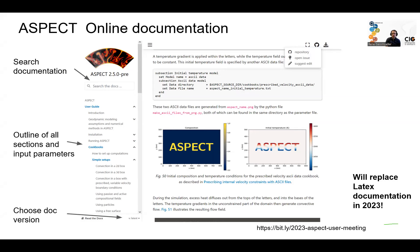It will be possible to choose the version of the documentation in the future — you can choose whether you want to see the latest development version or one of the previous releases. We will not be able to convert past releases to the new web page, so for past releases you would still need the PDF manual from the CIG website or by building it yourself. However, for the future, if you're running Aspect 2.5, you will be able to select that version to get the documentation matching your installed version.